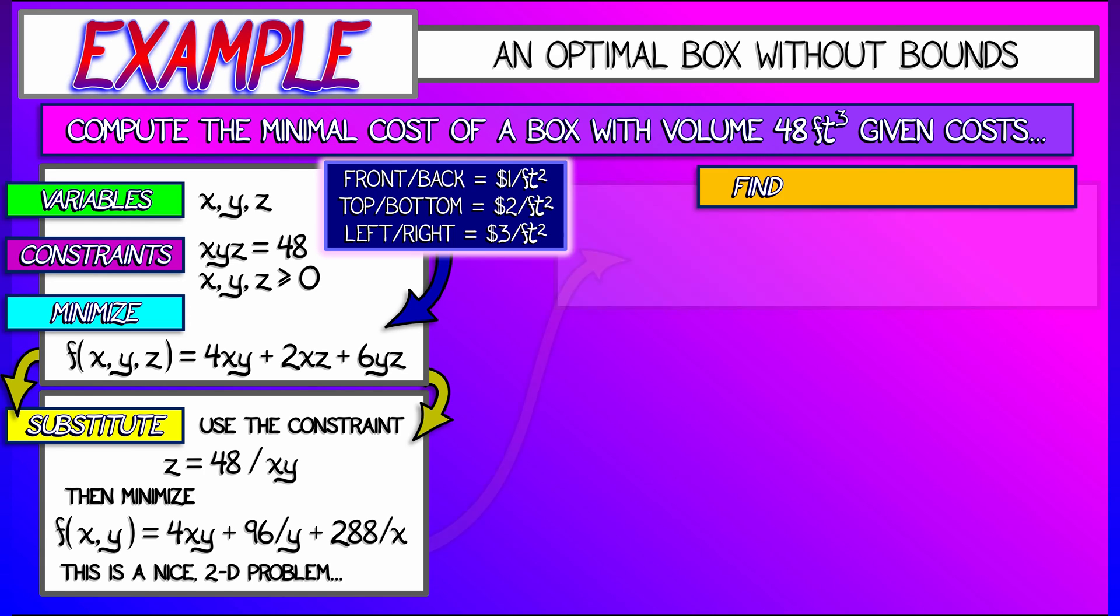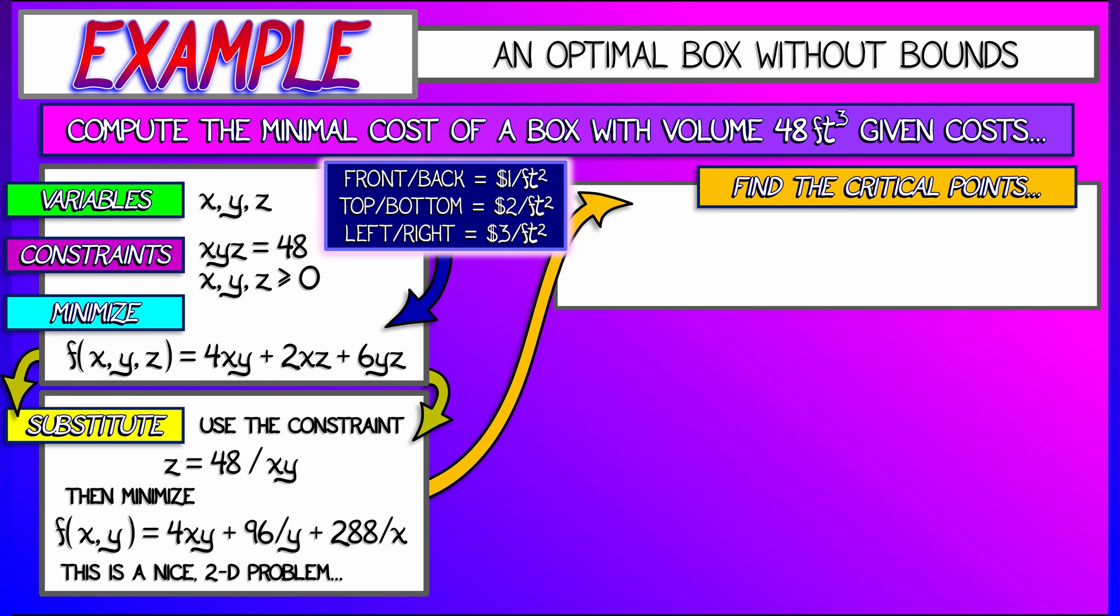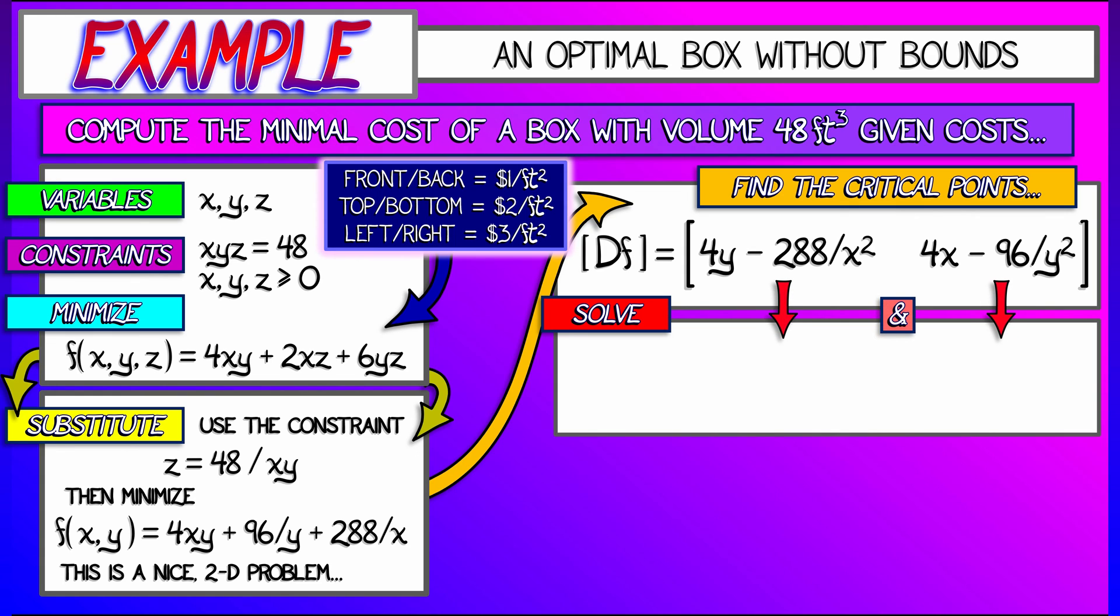This is going to be a nice optimization problem. Let's compute the first derivative. That is, the partial with respect to X, which is 4Y minus 288 divided by X squared, and then the partial with respect to Y, 4X minus 96 divided by Y squared. We have to set both of these equal to zero.